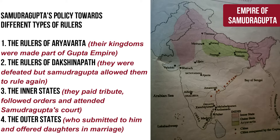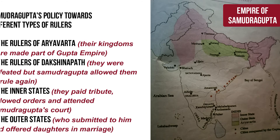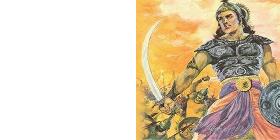Thirdly, the inner circle of neighbouring states brought tributes, followed the orders of Samudra Gupta, and attended his court. And lastly, the rulers of the outlying areas submitted to Samudra Gupta and offered daughters in marriage to maintain good relations with the Gupta empire.